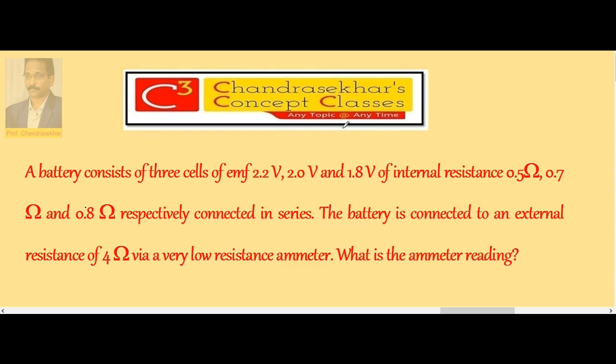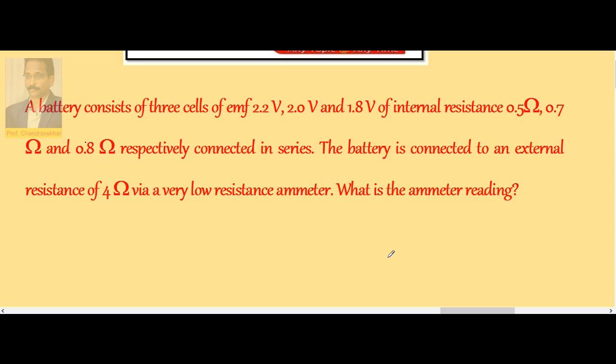A battery consists of three cells of EMF 2.2 volts, 2 volts and 1.8 volts of internal resistance 0.5 ohm, 0.7 ohm and 0.8 ohm respectively, connected in series. The battery is connected to an external resistance of 4 ohm via a very low resistance ammeter. What is the ammeter reading?